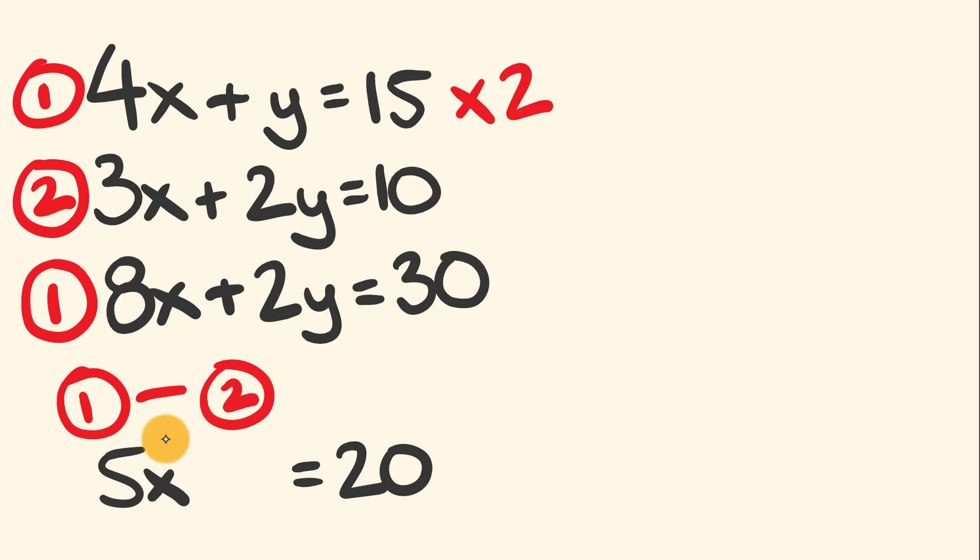This is really simple to solve. If 5 times a number equals 20, we can easily solve for x. x equals 4. I'll put a circle around that so we don't lose that answer.